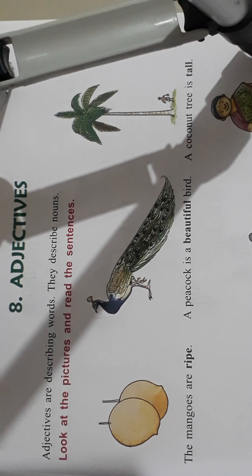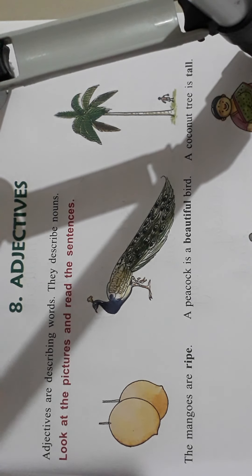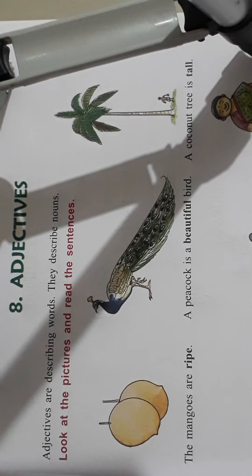Adjectives means — for example: she is a girl. She is an intelligent girl. She is a clever girl. She is kind, amazing, young — different describing words like beautiful. These are adjectives.